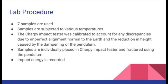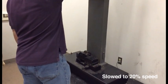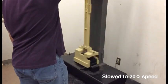In this lab, we used seven different samples, each approximately one centimeter by one centimeter by five centimeters. Each sample was subjected to various temperatures, including liquid nitrogen, a dry ice-ethanol mixture, a saltwater ice bath, an ice bath, boiling water, a furnace, and room temperature. Once they reach the desired temperature, the samples are placed in the Charpy impact tester with a notch facing away from the pendulum. The pendulum is then released and allowed to collide with the sample. The impact energy required to fracture the sample is measured and used to determine the ductile to brittle transition temperature. Here is a video of one of the samples being tested with the Charpy impact tester with assistance from Dr. Dallas Kingsbury.